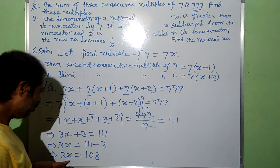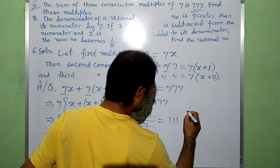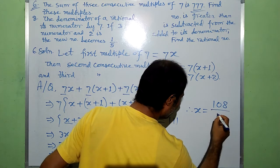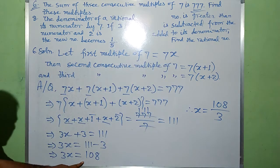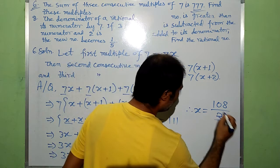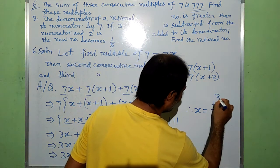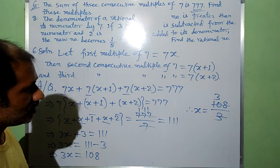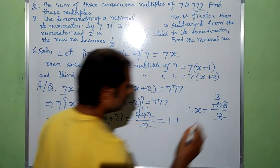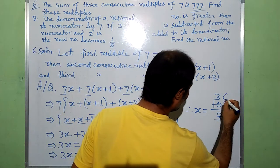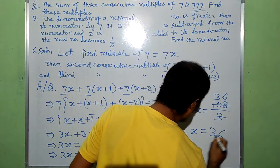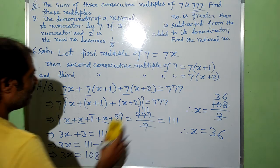Now the value of x is obtained. Hence x is equal to 108 by 3. Dividing, 108 divided by 3 gives 36. Hence x is equal to 36, and the variable part is obtained.